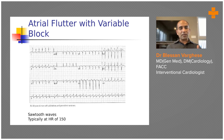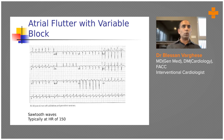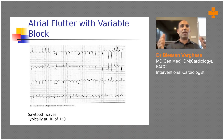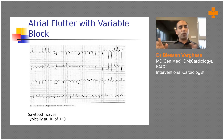Sometimes atrial flutter gets confused with supraventricular tachycardia. If you misdiagnose it as SVT and give adenosine, you will simply see the flutter waves exposed. With true SVT, when it reverts after adenosine, you see an isoelectric line followed by a P wave returning to normal sinus rhythm. With atrial flutter, adenosine only reveals the flutter waves and the rhythm then returns to rapid flutter.